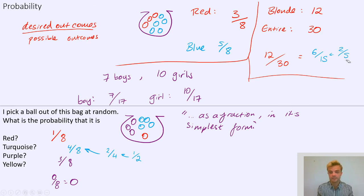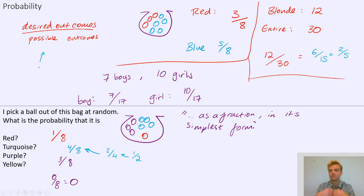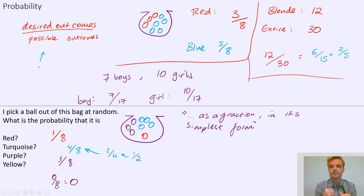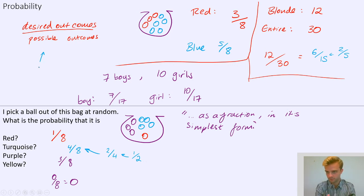So that's probability. You can think of it as a fraction: it is the desired outcome — the outcome that you're looking at, which might be picking a coloured ball or picking a certain type of student — out of all possible outcomes, so how many balls or students are there altogether. And in short, that's probability.